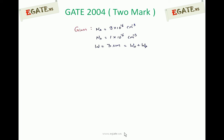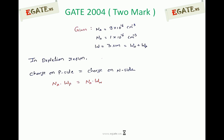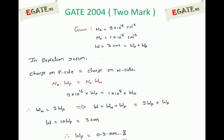Using this relation to solve the problem: Na = 9×10¹⁶, Nd = 1×10¹⁶, and total depletion width W = WN + WP = 3 μm. Substituting into Na·WP = Nd·WN gives 9×10¹⁶·WP = 1×10¹⁶·WN, so WN = 9·WP. Therefore W = 9·WP + WP = 10·WP = 3 μm, giving WP = 3/10 = 0.3 micrometers.